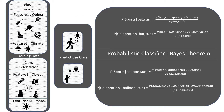Let us increase the complexity a little. In the first scenario we had one feature; now we consider two features. We have a training set with combinations of feature 1 and feature 2. Feature 1 had one of the symbols: a bat, a ball, or a skiing shoe. Feature 2 had either sun or rain. There were combinations of feature 1 and feature 2 for the class sports, and similarly for the class celebration. Now a new image is given — what is the class?